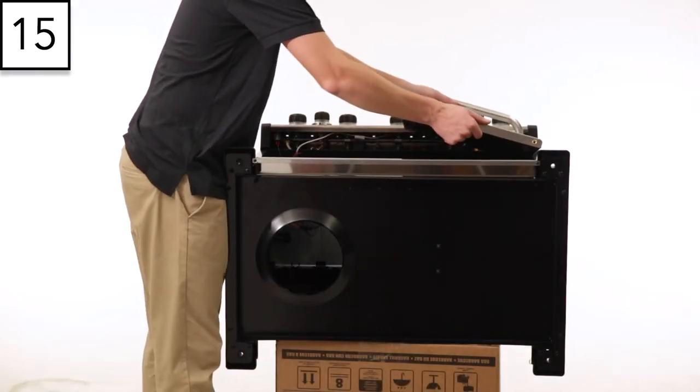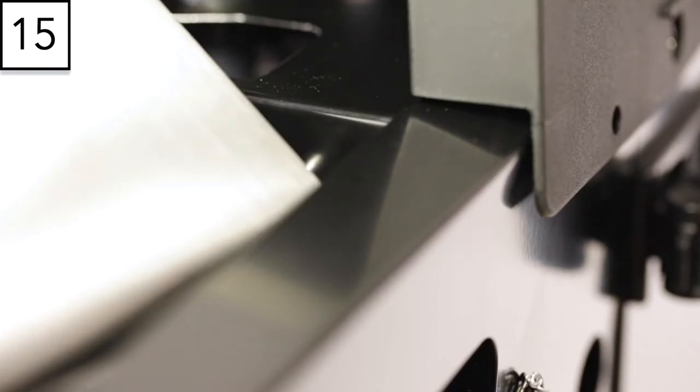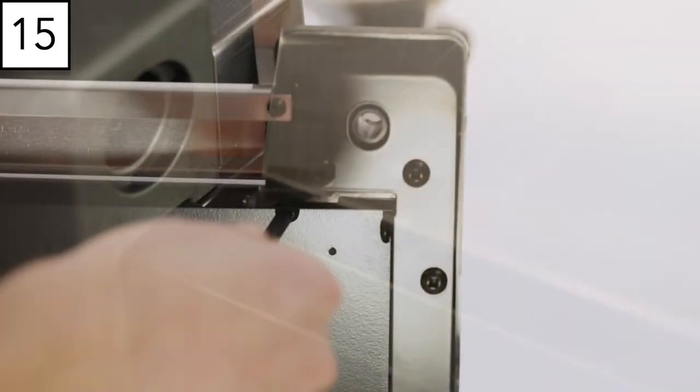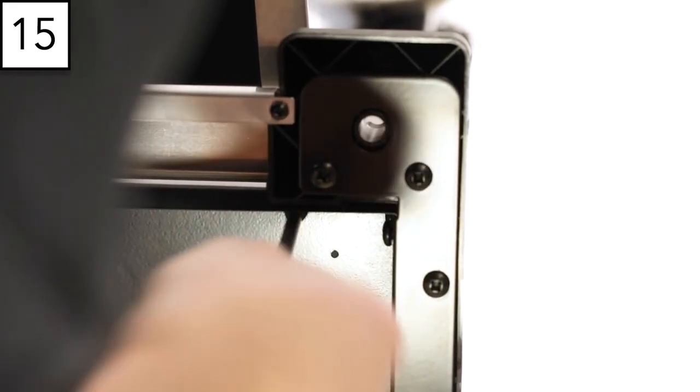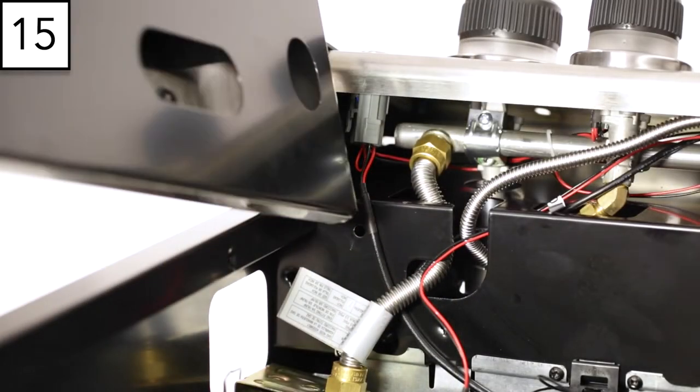Step 15. Install the doors on your barbecue. Insert the upper door pin into the opening on the cook box and align the bottom hole on the door with the bolt. Tighten the bolt secure. Repeat for the other door.